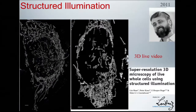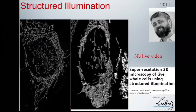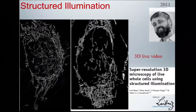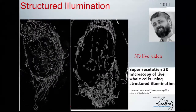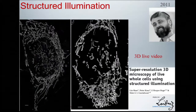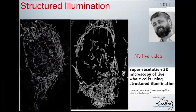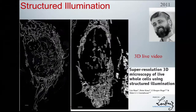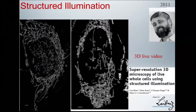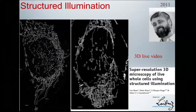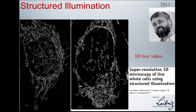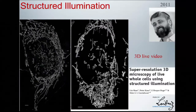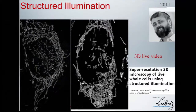Here's another great example from Mats Gustafsson's group: mitochondria in a cell imaged with structured illumination. Looking closely, you can see inside the mitochondria the substructures — the cristae — the internal membranes, which is quite remarkable. And a 3D version of the same approach.